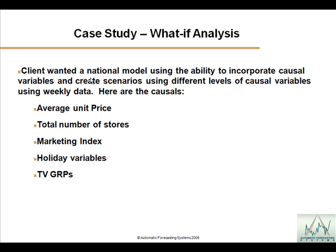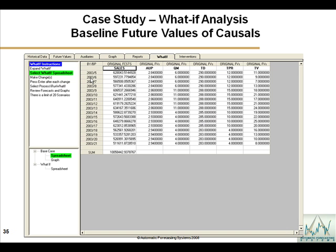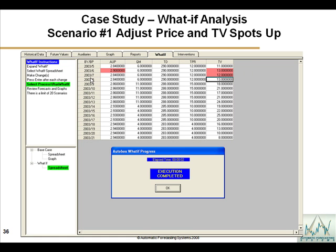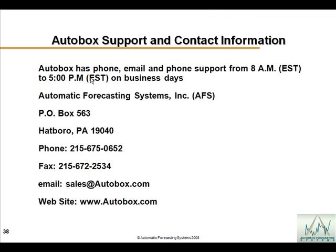If you have causal variables and want to do a what-if analysis, you start with a baseline forecast and baseline future values of your causal variables. Then you make changes to the causals in the future — price or GRPs, for example — rerun AutoBox, and you have a new scenario. AutoBox provides a graph and a table of the results.